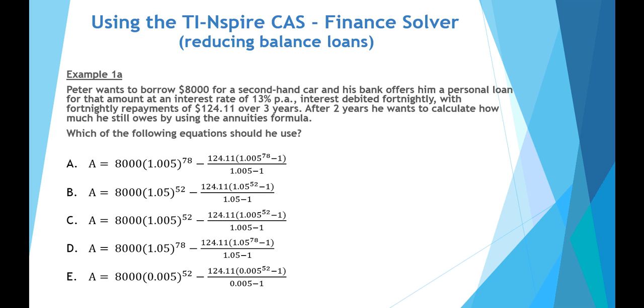So we've got a few examples to look at. Example 1A: Peter wants to borrow $8,000 for a second-hand car, and his bank offers him a personal loan for that amount at an interest rate of 13% per annum, interest debited fortnightly, with fortnightly repayments of $124.11 over three years. After two years, he wants to calculate how much he still owes by using the annuities formula. Which of the following equations should he use?